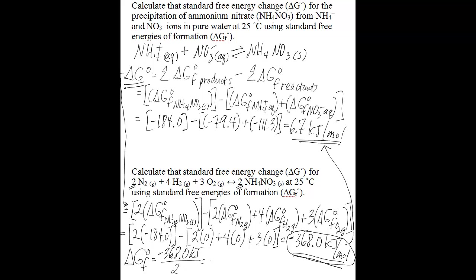The standard free energy of formation for ammonium nitrate will be equal to negative 368.0 kilojoules divided by 2, which gives you negative 184.0 kilojoules per mole. As you can see, this number is equal to the standard free energy of formation value that you substituted initially into the equation for ammonium nitrate.